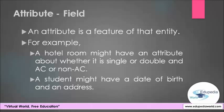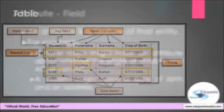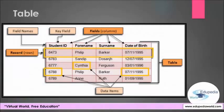All the data about a particular entity is stored in a single table. Each data item about the entity is a field. This illustration presents a database table. Data in a database table is organized into rows and columns, or else we can say records and fields. Each record in a relational database table corresponds to an entity. In this example table of students, there are five records and each record corresponds to an individual student.